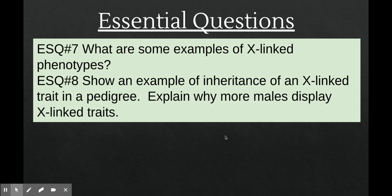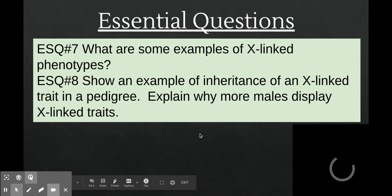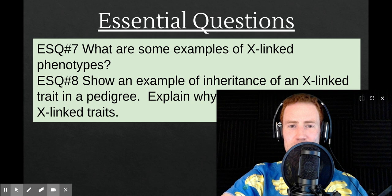At this point, hopefully you are aware of what X-linked inheritance is, can list some examples of X-linked traits, and can use pedigrees and Punnett squares to track the genetic inheritance of X-linked traits. I hope you enjoyed the lecture and will come back for future lectures — until next time, peace out.